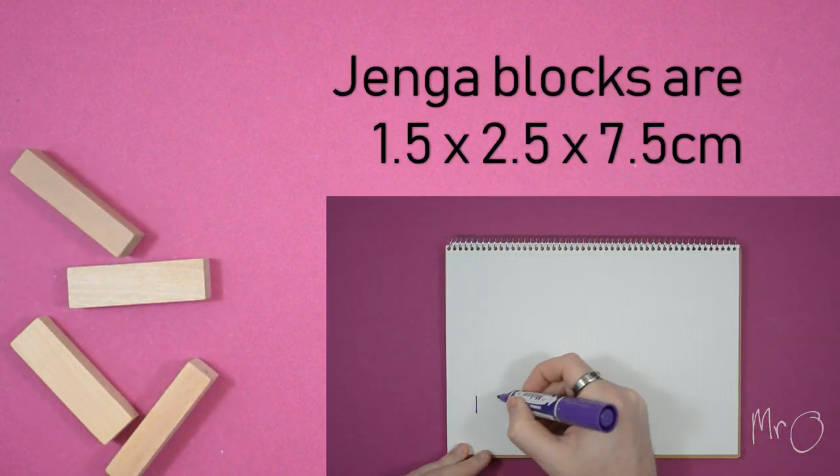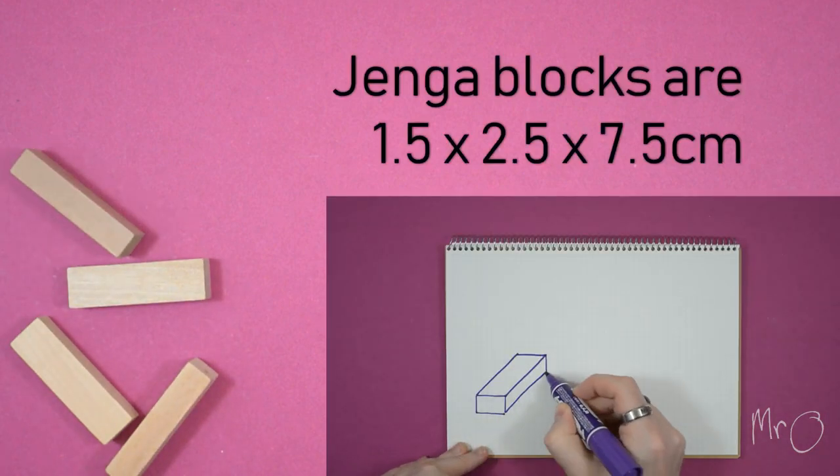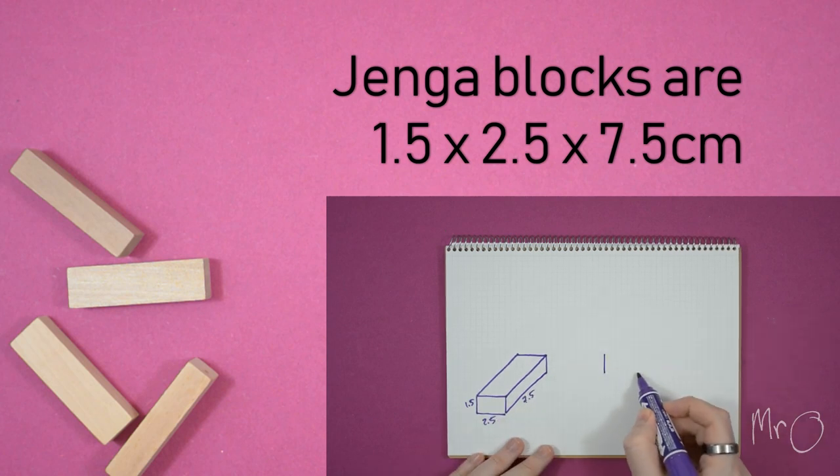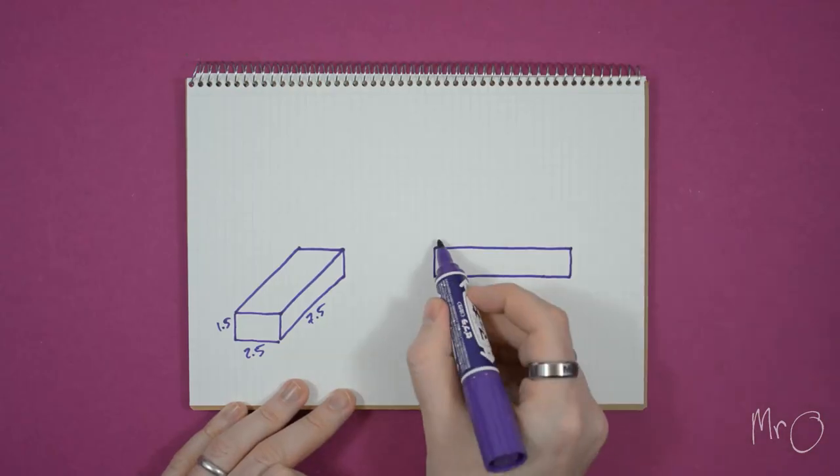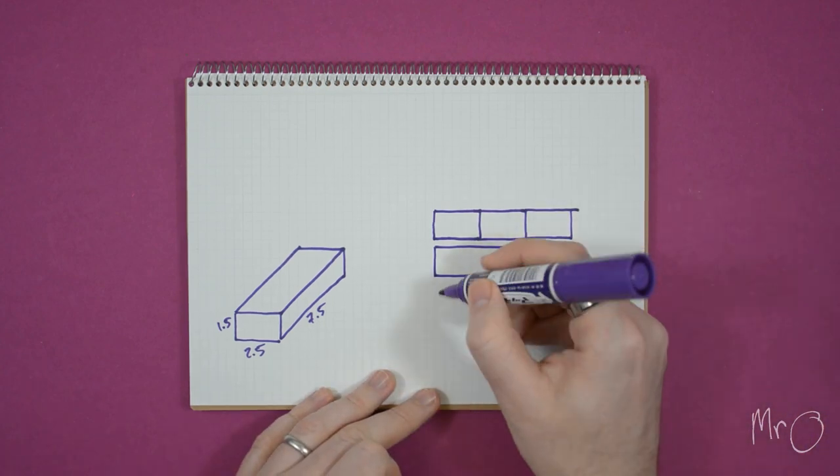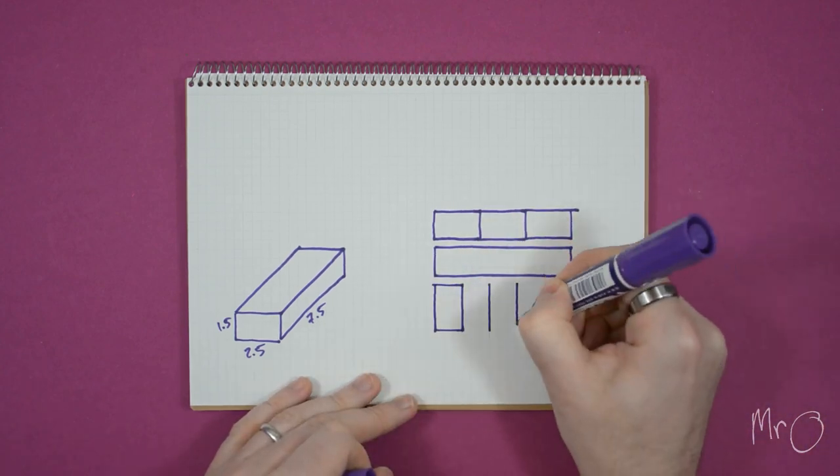Four: Jenga blocks are 1.5 cm by 2.5 cm by 7.5 cm, which means you can fit three this way or five this way along one block.